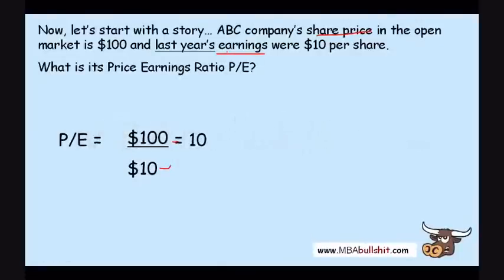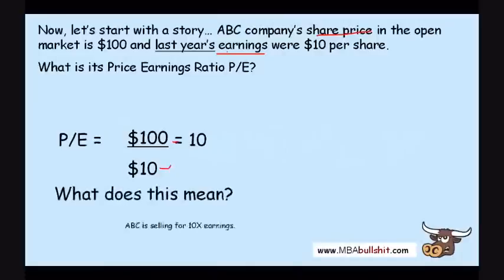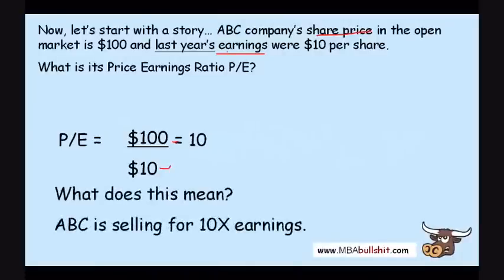Our Price Earnings Ratio is a very simple 10. What does this 10 mean? It means that ABC stock is selling in the market for 10 times its earnings. That's all it means.